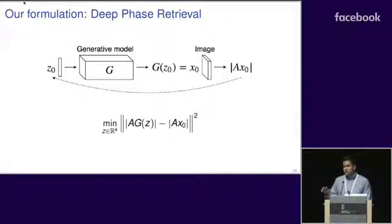That's what brings us to our formulation of the problem, which is phase retrieval under a generative prior. Here, we have these nonlinear measurements, the absolute value of A times x₀. We want to recover the image x₀ by assuming it's the output of a generative model. In order to recover the image, we can recover the original latent code corresponding to it, for which we can get the image back by just applying the generative model.